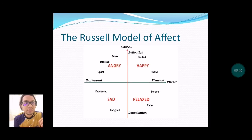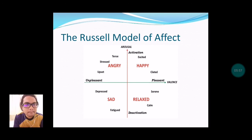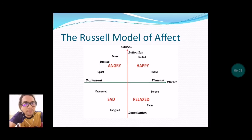Next is the Russell model of affect. In this model, there is a picture that illustrates feelings across four states: angry, happy, sad, and relaxed. Kita dapat lihat bagaimana perasaan yang didapati melalui model ini.